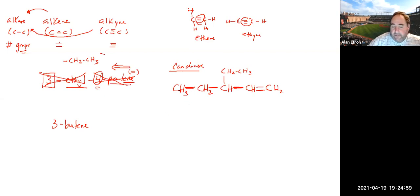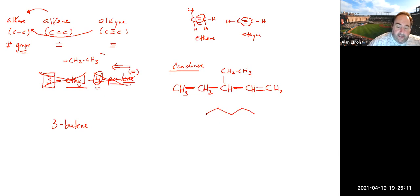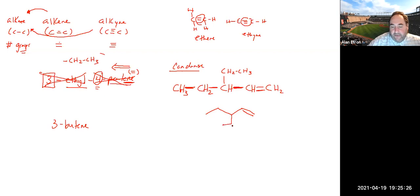If you wanted to draw the line structure: start with a five-carbon chain, carbons one through five. Carbon one on the left, and carbon four is where the double bond is. At carbon three, the two-carbon ethyl group branches off. That's how you convert from the condensed formula to the line structure.